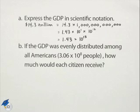If the GDP was evenly distributed among all Americans, which is 3.06 times 10 to the 8th people, how much would each citizen receive?